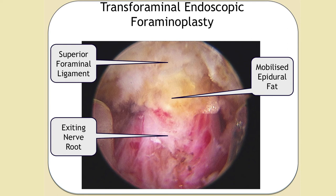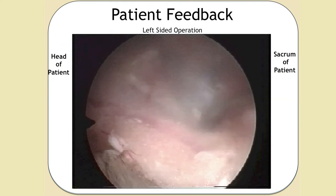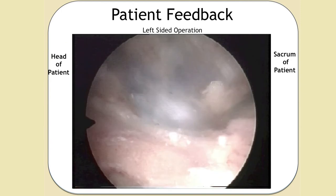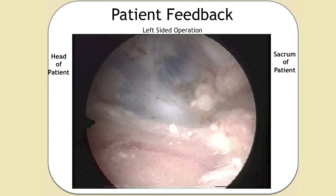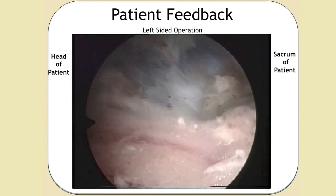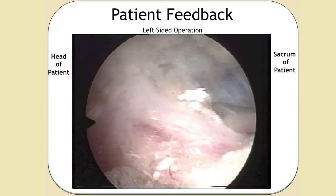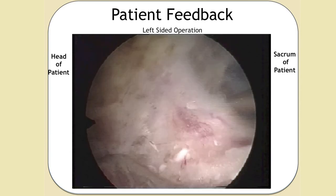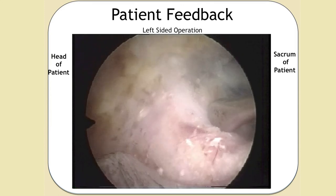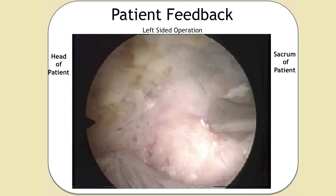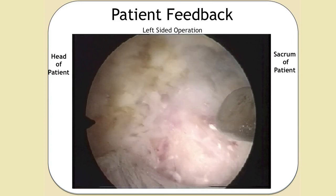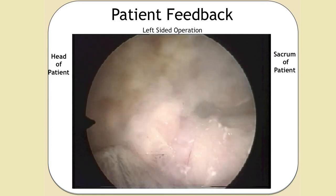Here is the nerve running across with its little vessel on top. After clearing away the scarring, here's the superior foraminal ligament. What this shows is that the disc — which we've stained blue — is very soft and protruding, and that the nerve was adherent to that billowing disc. If you leave it like that, you're going to have ongoing symptoms.